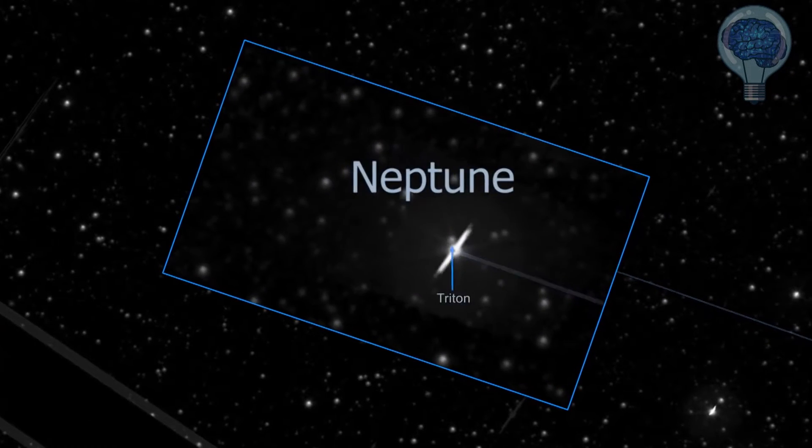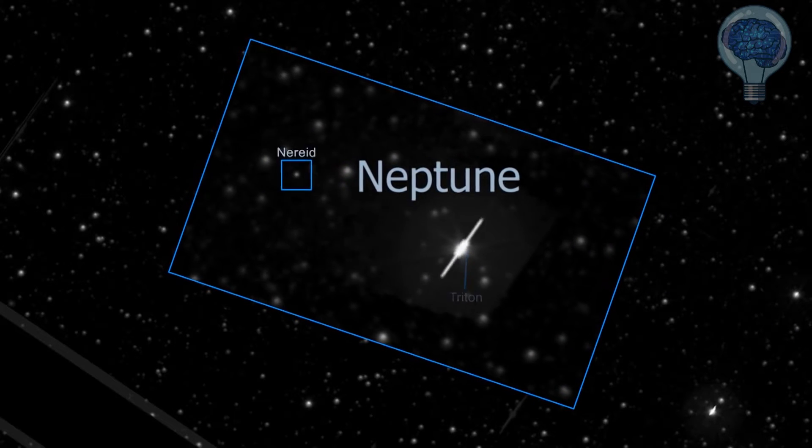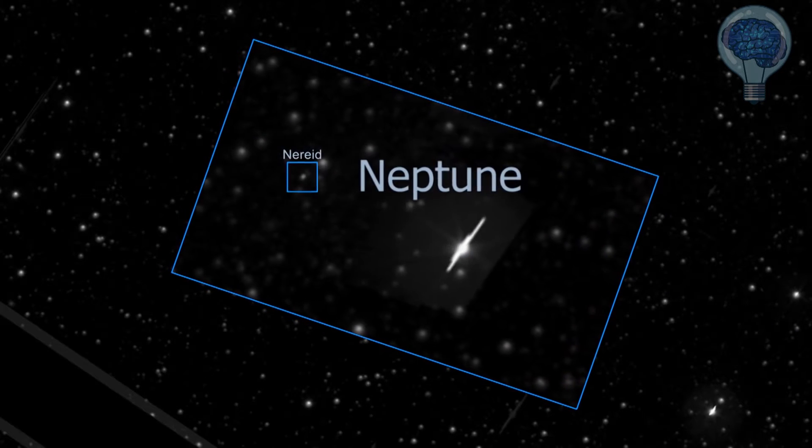The dot orbiting Neptune is its largest moon, Triton, while the smaller moon Nereid trails faintly to the east.